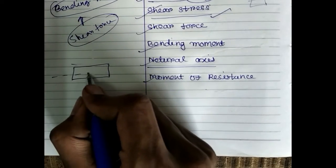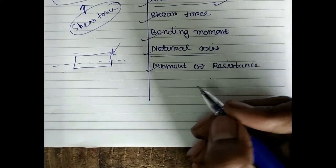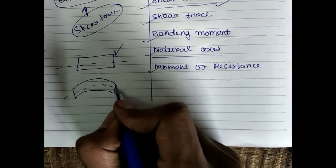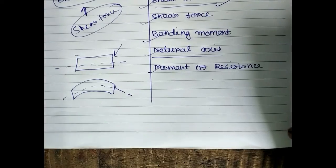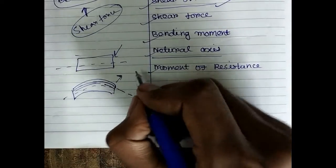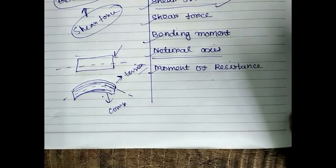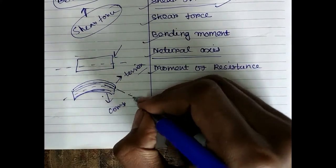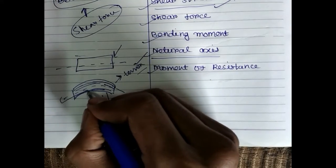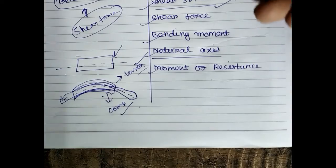Now let's understand what is neutral axis. Consider this is a section of a beam and this is the neutral axis of that section. If that section is subjected to bending, some layers are subjected to tension and some layers are subjected to compression due to bending. However, there is a layer which is free from both tension and compression — that layer is known as the neutral axis. So the neutral axis is the axis which is free from tension and compression after the application of moment.